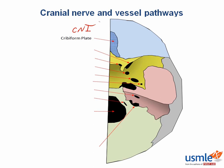Next, on the sphenoid bone, we have the optic canal. This is where cranial nerve two, as well as its associated vessels — the ophthalmic artery and the central retinal vein — pass through.